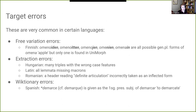Let me go through a couple of patterns of error. Target errors are very common in certain languages. In Finnish, there are five different possible genitive plural forms of the word meaning 'apple,' but only one is found in Unimorph. There were serious extraction errors in Hungarian, Latin, and Romanian — I believe all since corrected in Unimorph, thanks in part to our work. The Latin error is quite egregious: the lemmas don't have macrons indicating long vowels, which are present in the inflected forms but not in the lemma, making the task effectively impossible. There was also an error in Spanish traceable to the Diccionario de la Lengua Española from the Real Academia Española.